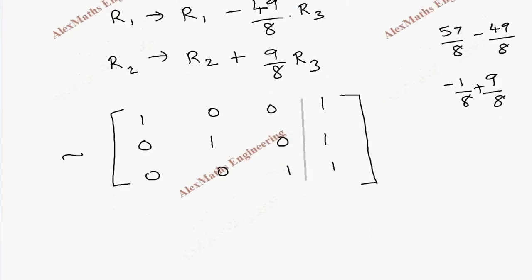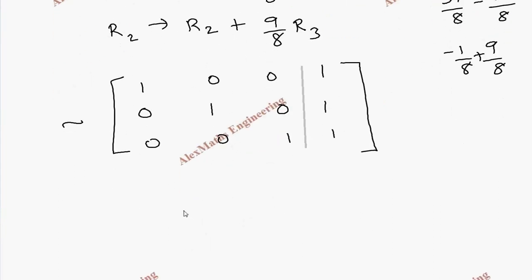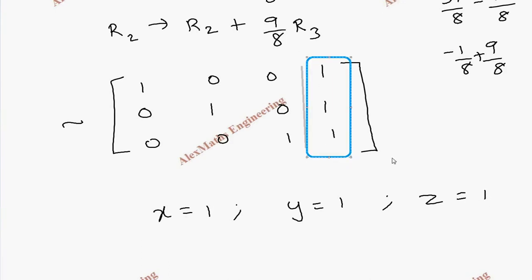After we convert this into the diagonal matrix, we directly take the values of x, y, and z. That is: x = 1, y = 1, and z = 1. So from this we get the solution directly.